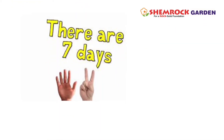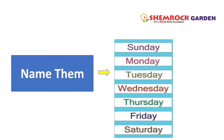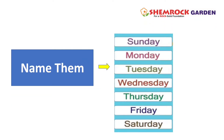There are 7 days in a week. Name them: Sunday, Monday, Tuesday, Wednesday, Thursday, Friday, Saturday.